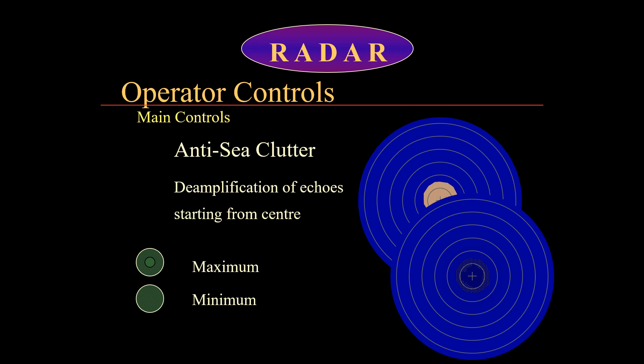On screen you can see the difference: with sea clutter off, the clutter surrounds the center of the radar screen, not allowing nearby or smaller targets to be picked up. As soon as the sea clutter control is applied, the center of the radar screen clears up and smaller targets previously hidden by the sea clutter become visible.